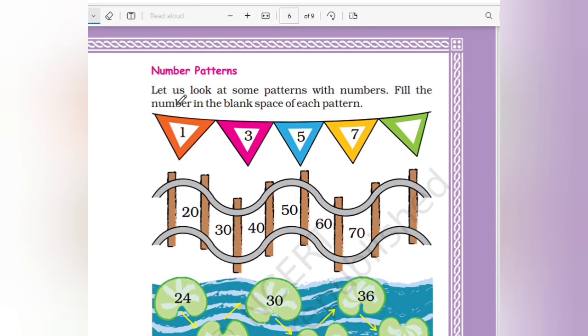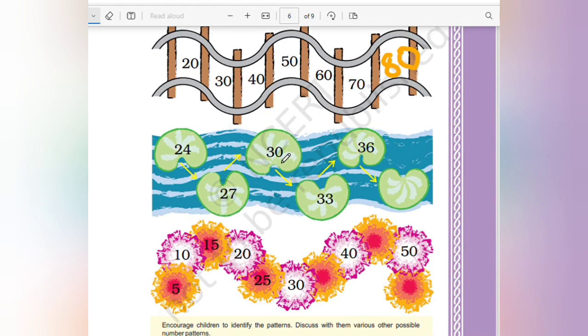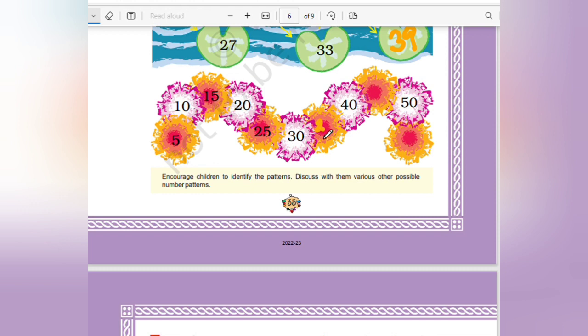Number patterns. Let us look at some patterns with numbers. Numbers in the patterns, not complete the numbers in the blank spacer. 1, 3, 5, 7, 9. Okay, so 20, 30, 40, 50, 60, 70, after that it is 80. For the fill gap, 24 plus 3 is 27, plus 3 is 30, plus 3 is 33, plus 3 is 36, after that plus 3 it is 39. 5, 10, 15, 20, 25, 30, here comes 35, then 40, after that 45, 50, after that 55.